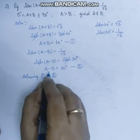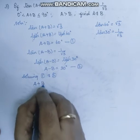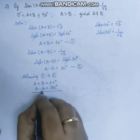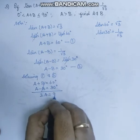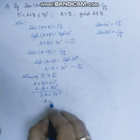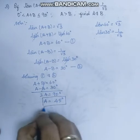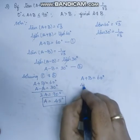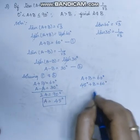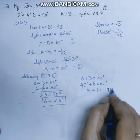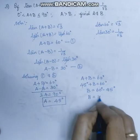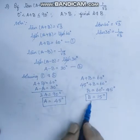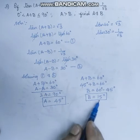Solving equations 1 and 2, we can find the value of a and b. a plus b equals 60 degree, and a minus b equals 30 degree. Adding both equations, b cancels, giving 2a equals 90 degree, so a is equal to 45 degree. Substituting back: a plus b equals 60 degree, so 60 minus 45 gives b equal to 15 degree. The condition a greater than b is satisfied since 45 is greater than 15.